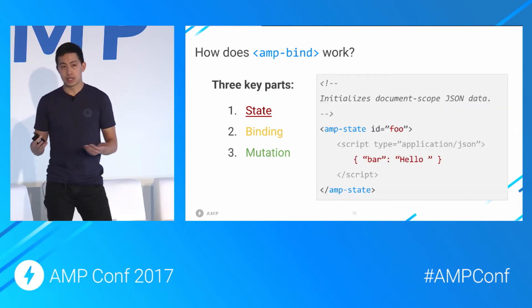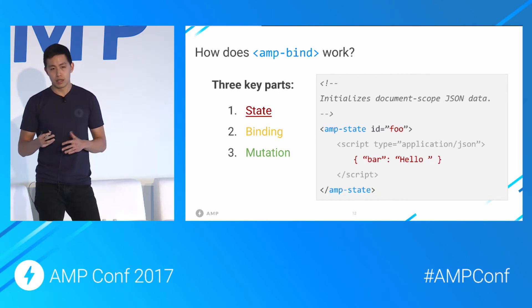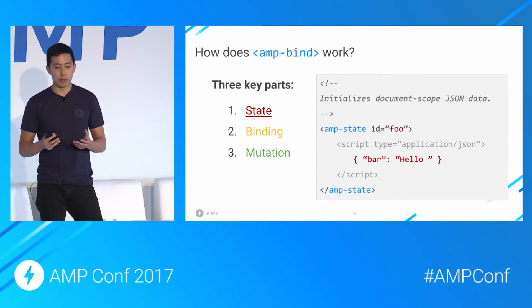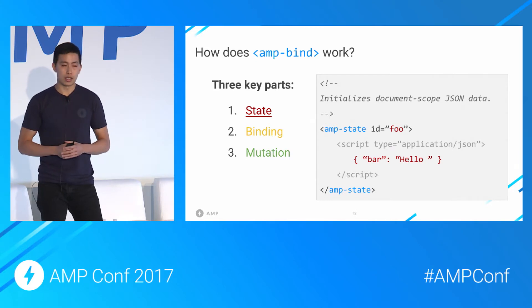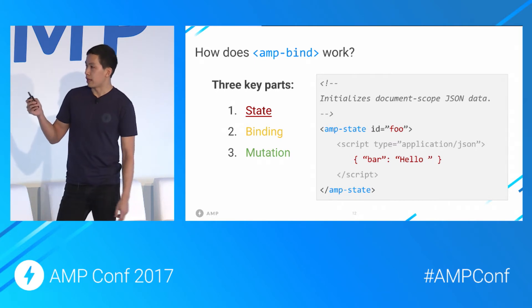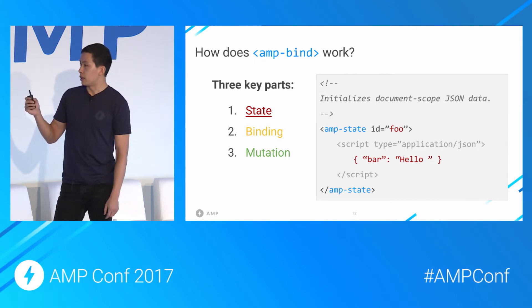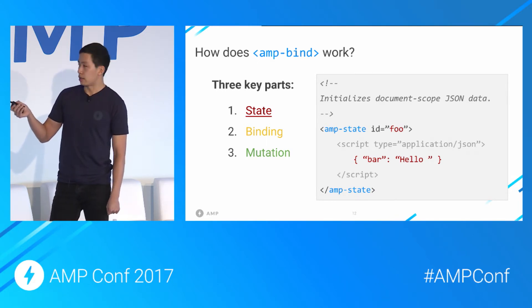The first part is state. AMP bind introduces a concept of document-level JSON mutable state, and it adds a new sub-component called amp-state, which is basically a component that wraps JSON data in the DOM. amp-state initializes this document-level data. In this simple example, we have an amp-state element with ID foo, wrapping a simple JSON object with a single key-value pair: a key bar that maps to the string hello.